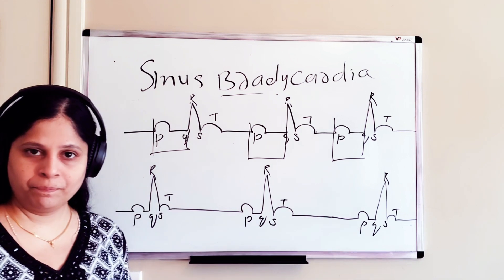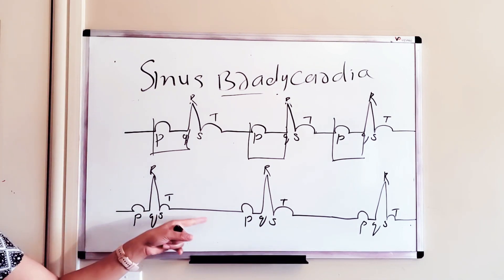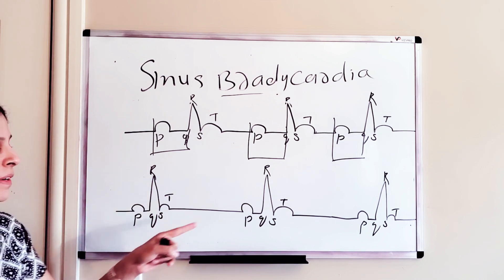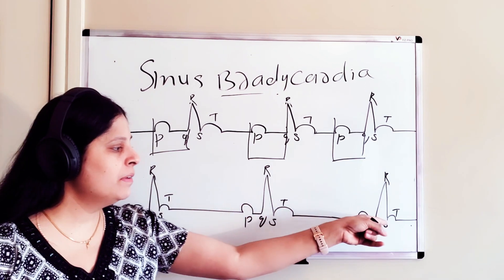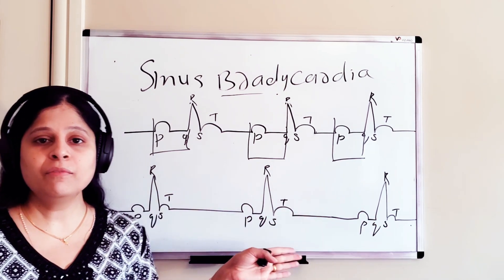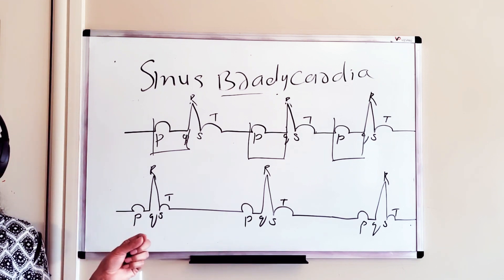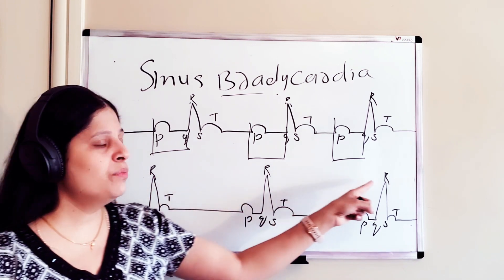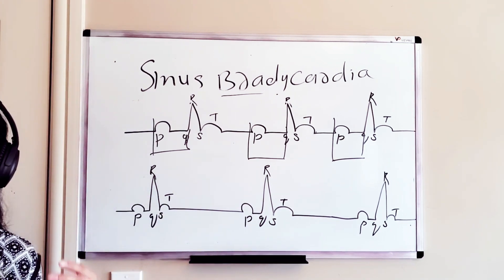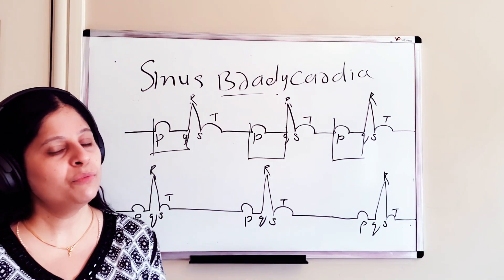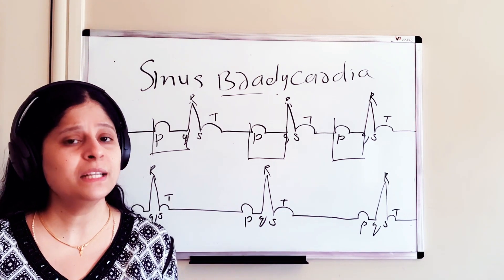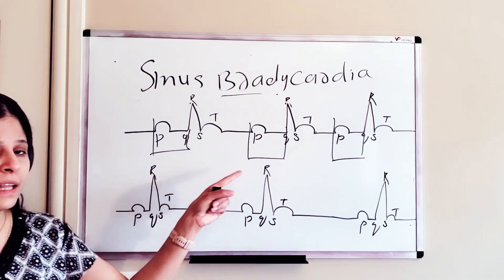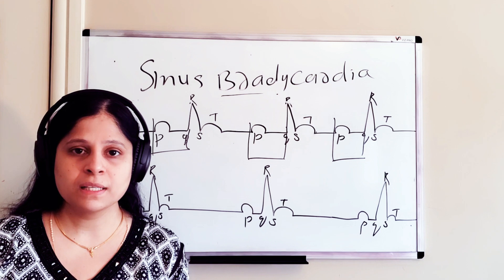Now look at the second rhythm. You can see P wave, QRS complex, T wave — none of the waves are missing. However, what is the difference? The RR interval is very prolonged. You can definitely say it's not within five big boxes — it is greater than that.